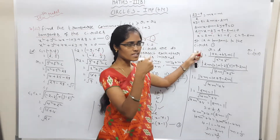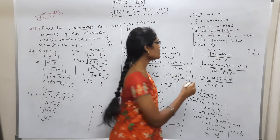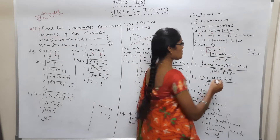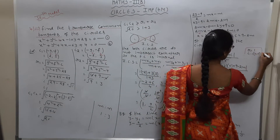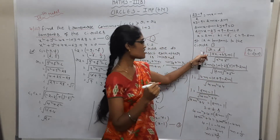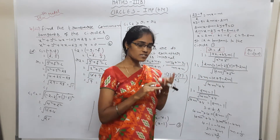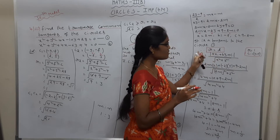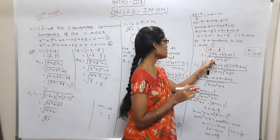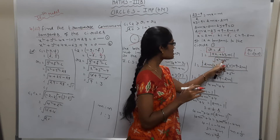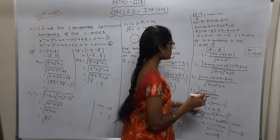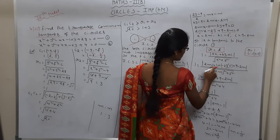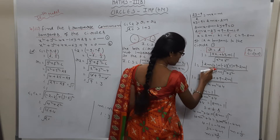Since the line is tangent to the circle, we apply the condition R = D, where R is the radius and D is the perpendicular distance from the center to the line. The perpendicular distance formula is |Ax1 + By1 + C| / √(A² + B²). Substituting A = 2m, B = −2, C = 9 − 2m with the first circle's center and radius 1.